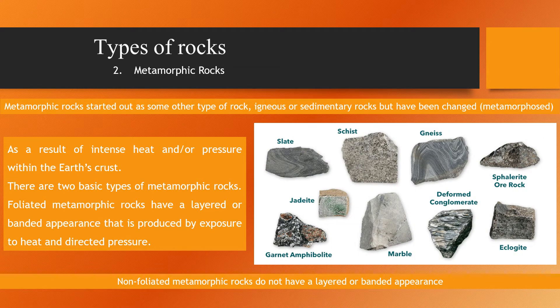Second, metamorphic rocks. Metamorphic rocks started out as another type of rock — igneous or sedimentary rocks — but have been changed as a result of intense heat and pressure within the Earth's crust. Exposure to these extreme conditions has altered the mineralogy, texture, and chemical composition of the rocks. There are two basic types of metamorphic rocks.